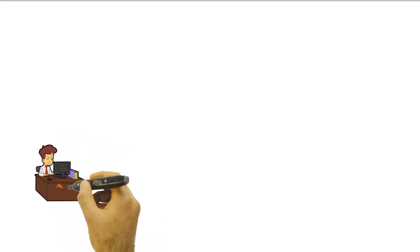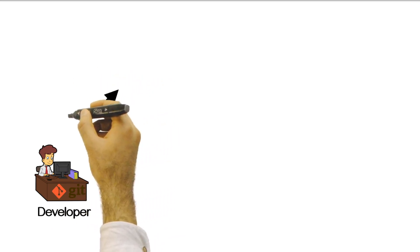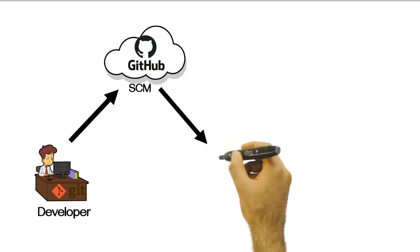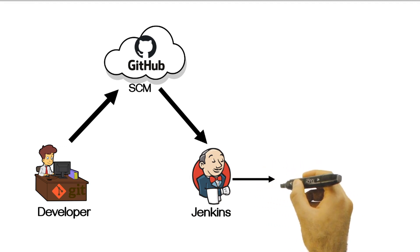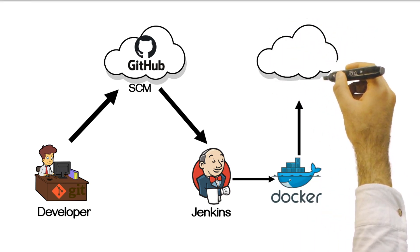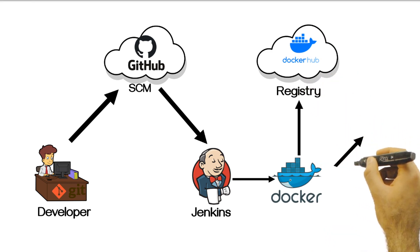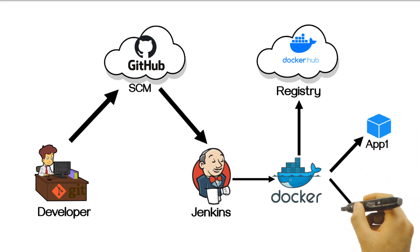Let's see the automation workflow. Once the developer finishes coding, they will update into the local repository and then push to the remote repository. Here we are using GitHub as our remote repository for source code management. Once the code is updated into the remote repository, it will automatically get triggered and the Jenkins build will start. Jenkins will build the Dockerfile, create an image, and that image will be published into the registry. We are using Docker Hub as our registry, and then we'll create containers — app1 as one container and app2 as the second container.